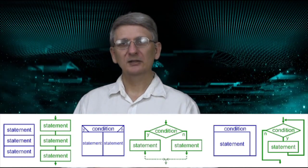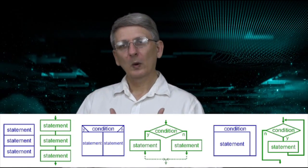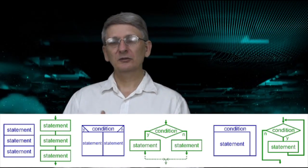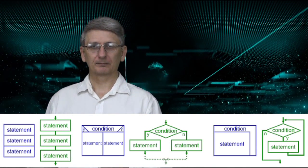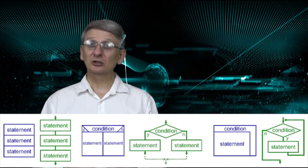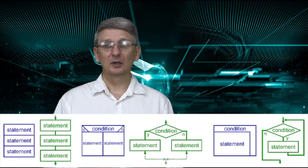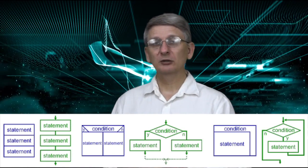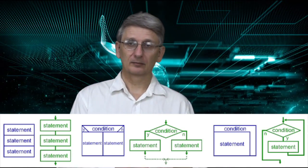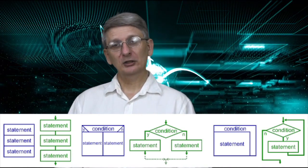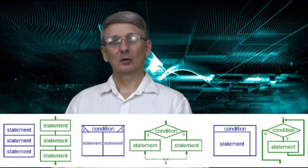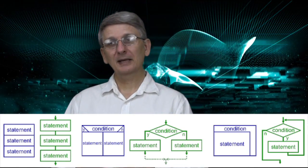The first of these is sequence, where the algorithm does a sequence of steps one at a time. The next is selection, or branching, where we choose between a range of different pathways. And then we have iteration, or repeating, where we can gain efficiency by repeating blocks of code.